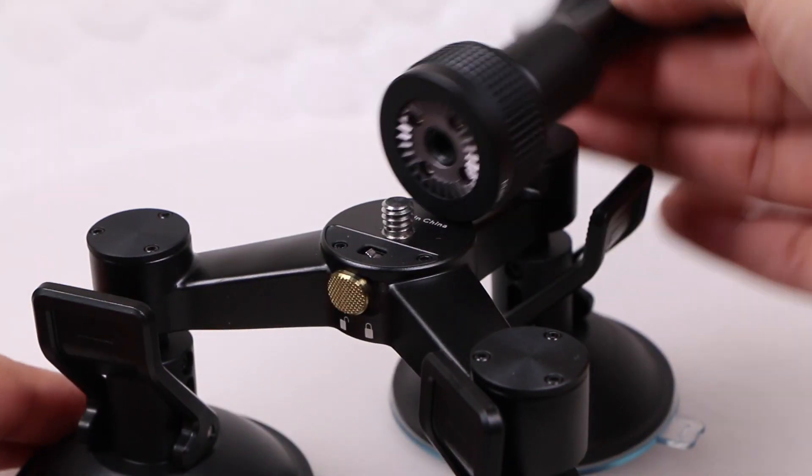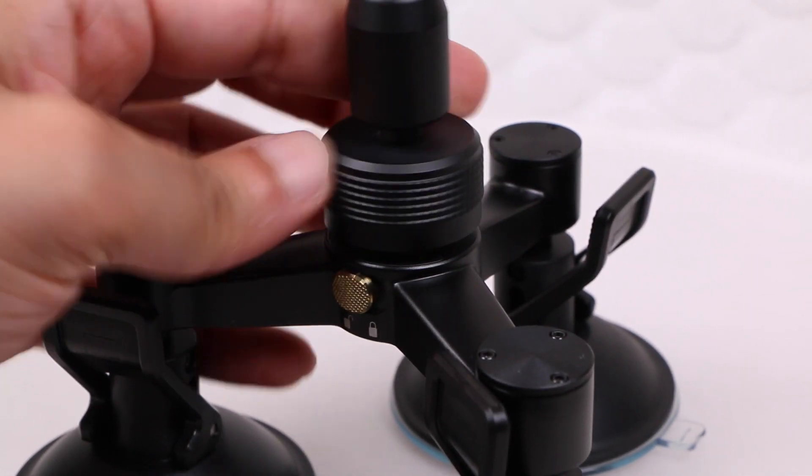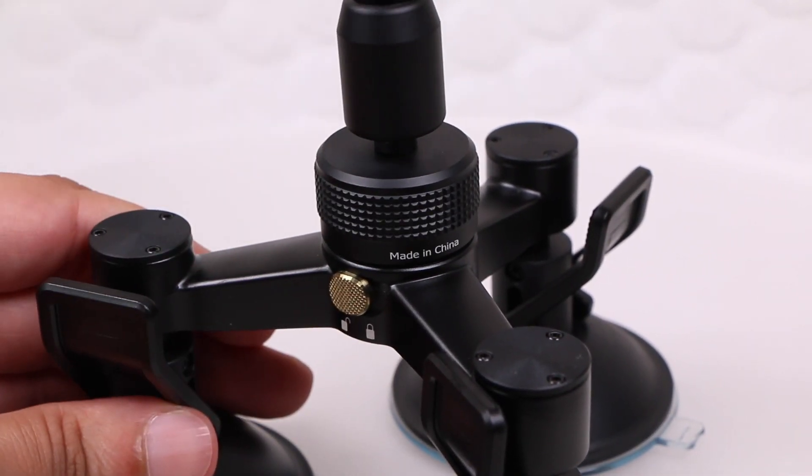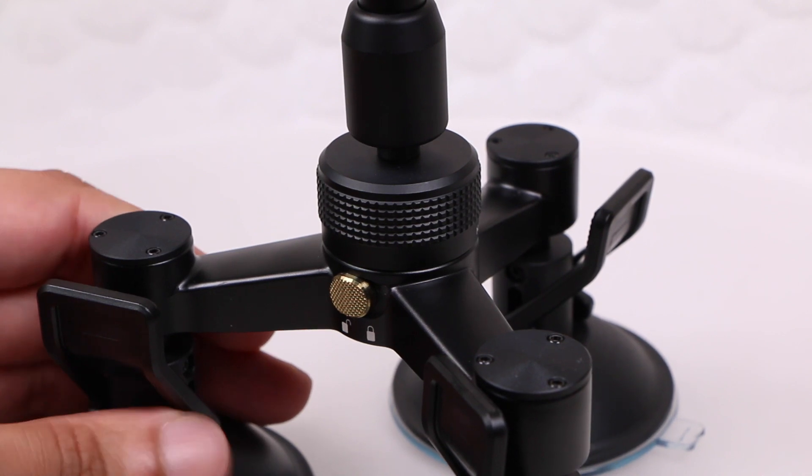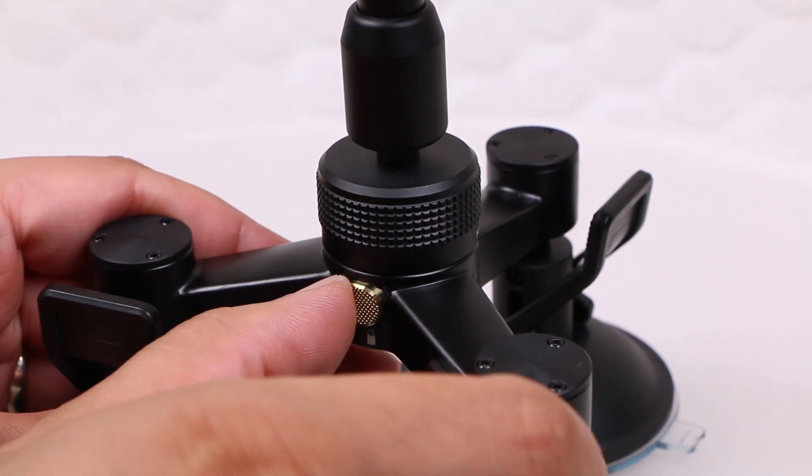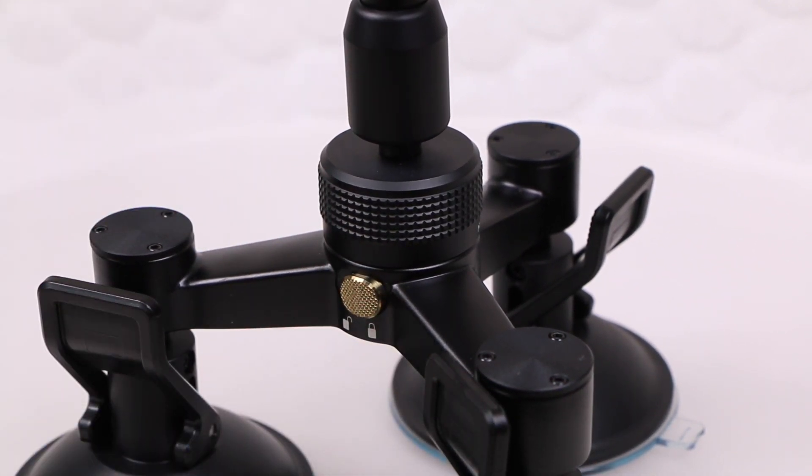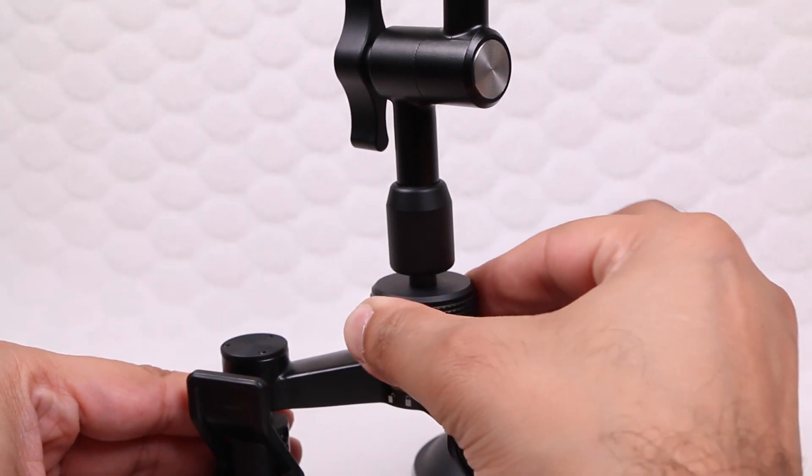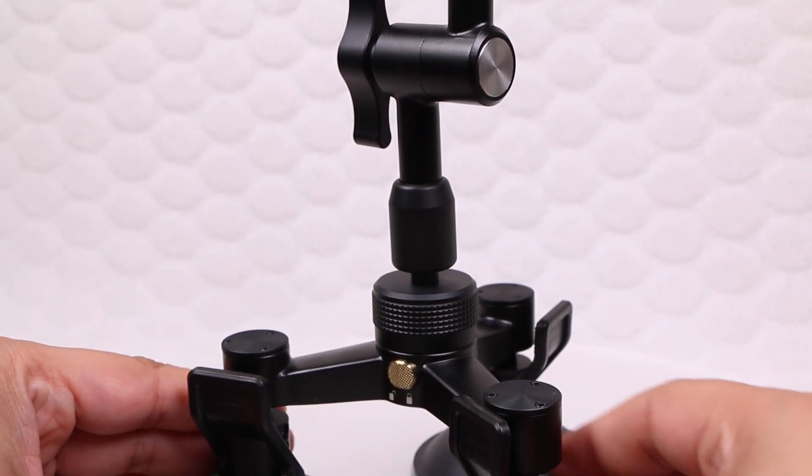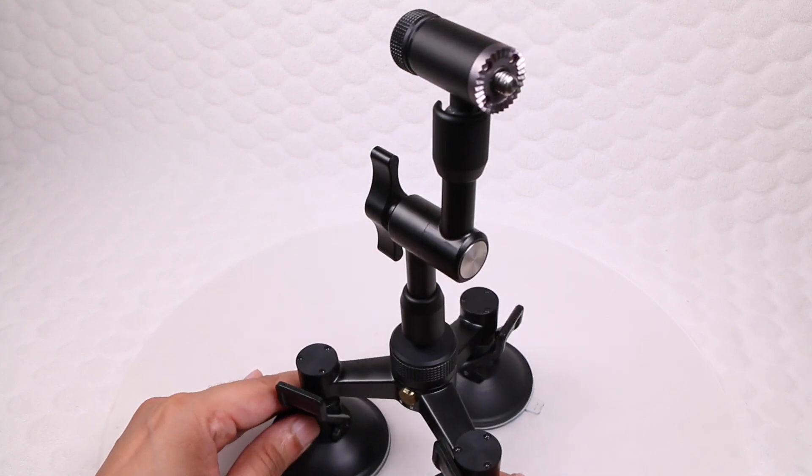The arm itself fits onto the suction cup design using the rosette style mount found throughout the Osmo ecosystem. The locking button we saw earlier built into the suction cup mount then locks into the teeth of the adjustable arm, ensuring it does not work itself loose under any circumstances. A rather simple yet ingenious design.